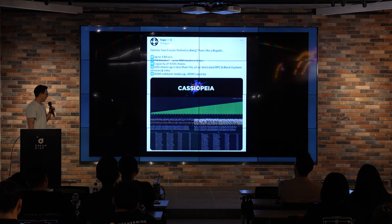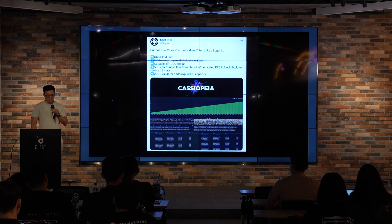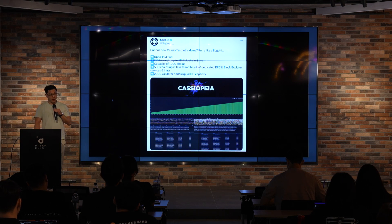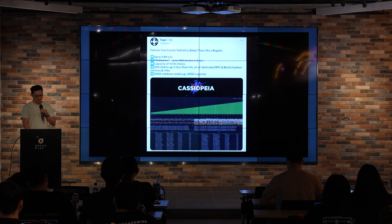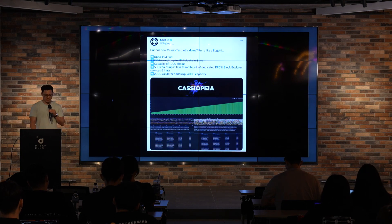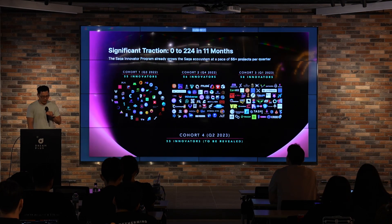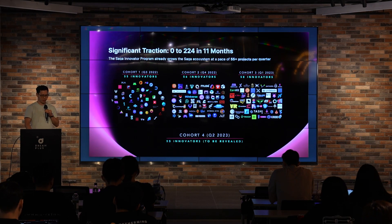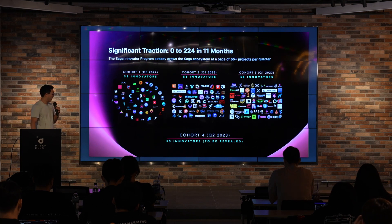We've had a testnet up for about two months. We did a stress test where we launched about 500 chains in less than an hour — that's about 10 seconds to launch a chain, and tearing down is roughly the same speed. We have about 200-plus projects building on us; the vast majority are game developers who want their own dedicated chain space.